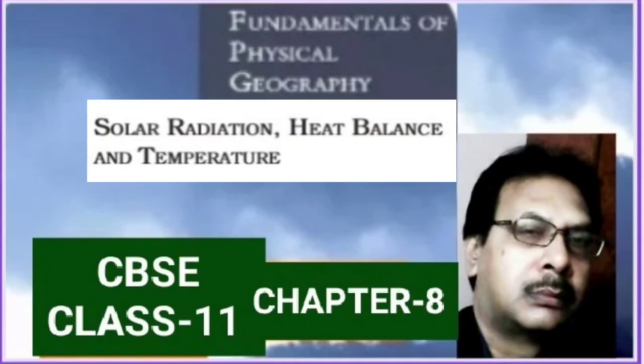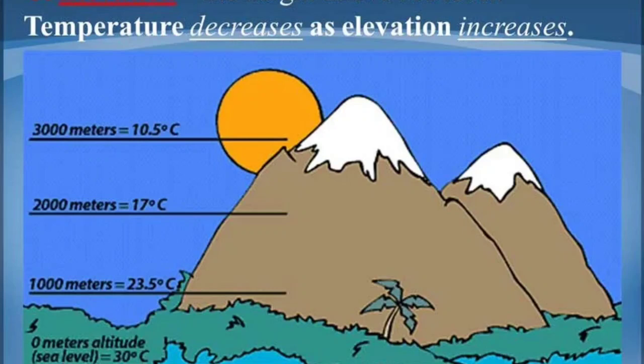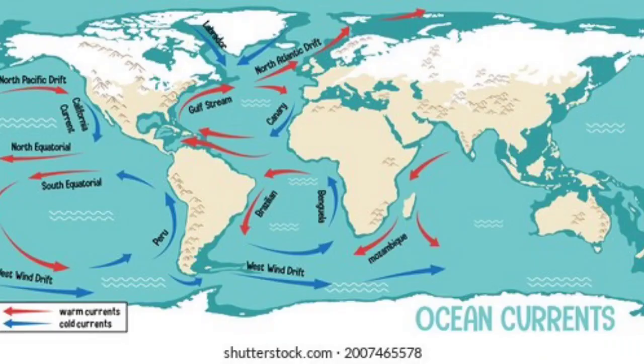Temperature of air at any place is influenced by many factors, like the latitude at which a place is situated, the altitude of the place, distance from the sea of that place, air mass circulation, the presence of warm and cold ocean currents along the coast, and also some local aspects which influence the temperature distribution.